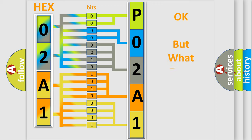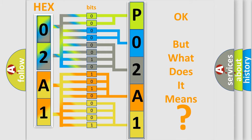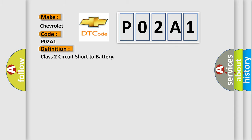The number itself does not make sense to us if we cannot assign information about what it actually expresses. So, what does the diagnostic trouble code P02A1 interpret specifically for Chevrolet car manufacturers? The basic definition is: Class II circuit short to battery. And now this is a short description of this DTC code.